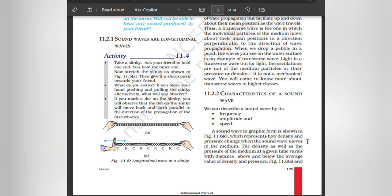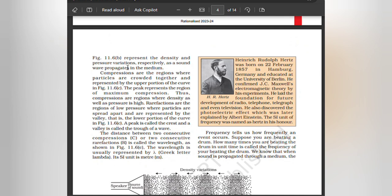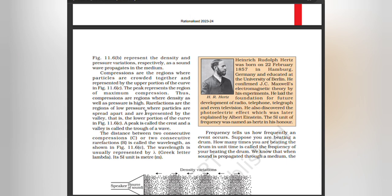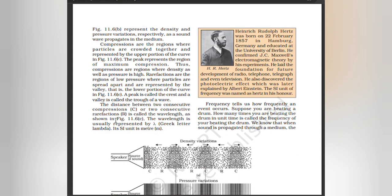Characteristics of a sound wave: You can describe a sound wave by its frequency, amplitude, and speed. A sound wave in graphic form shows how density and pressure change when the sound wave moves in a medium. The density as well as the pressure of the medium at a given time varies with distance above and below the average value. Compressions are the regions where particles are crowded together, represented by the upper portion of the curve; the peak represents a region of maximum compression — regions of high density and high pressure. Rarefactions are regions of low pressure where particles are spread apart, represented by the lower portion of the curve. A peak is called the crest and a valley is called the trough of the wave. The distance between two consecutive compressions or two consecutive rarefactions is called the wavelength, usually represented by lambda (λ). Its SI unit is meter.